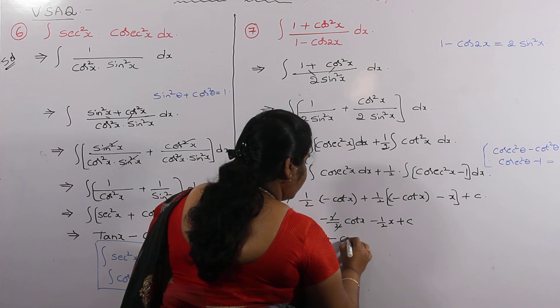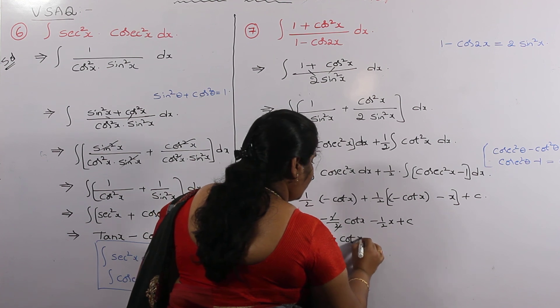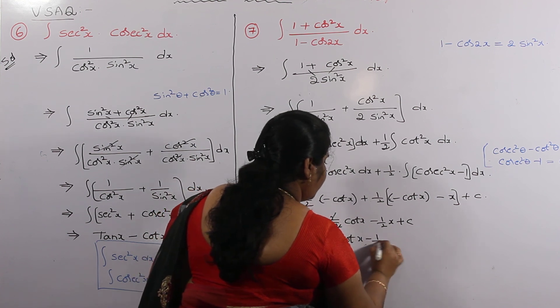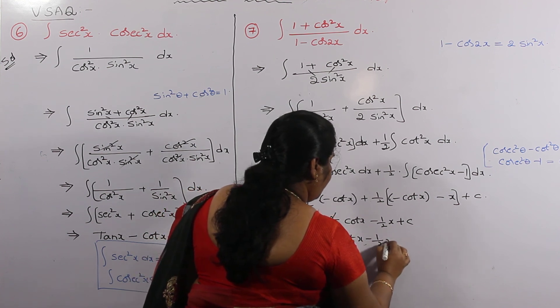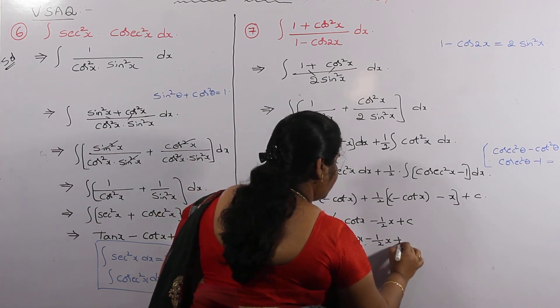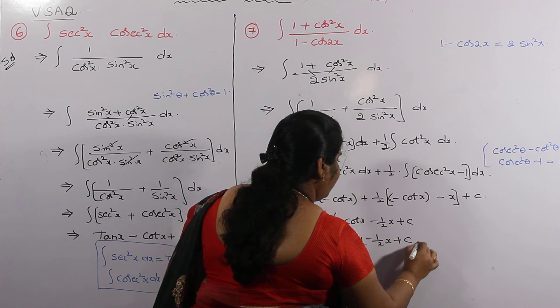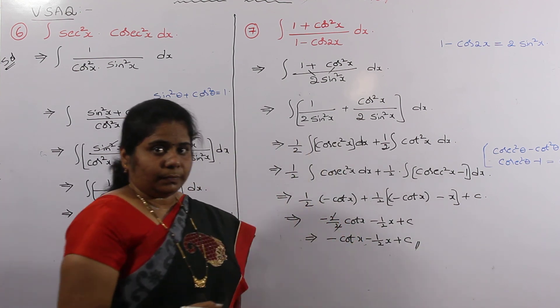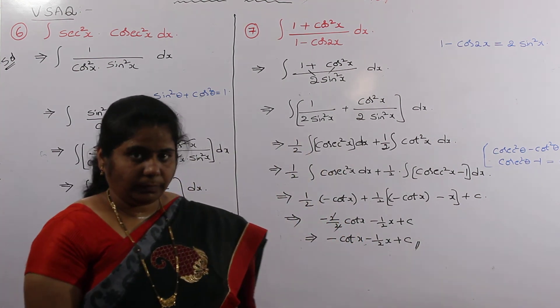So the final answer is minus cot x minus one half times x plus C.